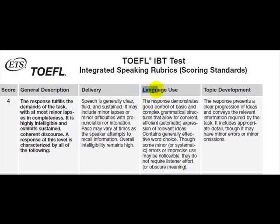We're back on language use. Where it says: 'Contains generally effective word choice. Though some minor or systematic errors or imprecise use may be noticeable, they do not require effort or obscure meaning.' I think that's the big one right there. The purpose now is to go back to the speech and look at it within the lens of that criteria — effective word choice, and even though you have some minor or systematic errors, they don't require listener effort or obscure meaning.